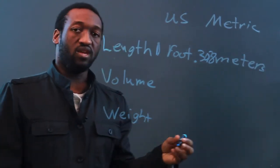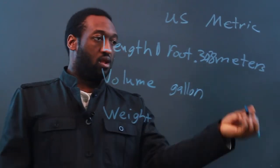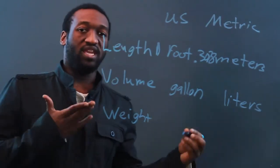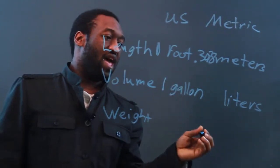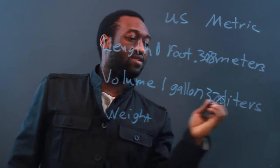For volume, in the U.S., we use the gallon. And in the metric system, we use liters. And once again for comparison, one gallon is equal to 3.785 liters.